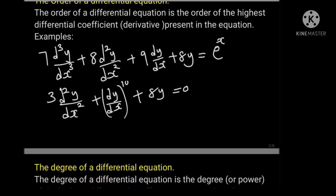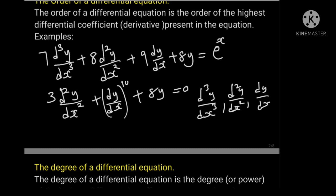For example: 7 d cubed y over dx cubed plus 8 d squared y over dx squared plus 9 dy over dx plus 8y equals to e to the x. In this differential equation, the derivatives present are d cubed y over dx cubed, d squared y over dx squared, and dy over dx. Among these, the highest differential coefficient is d cubed y over dx cubed. Therefore, the order of this differential equation is 3.